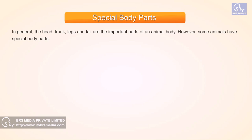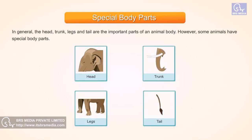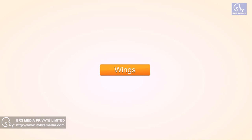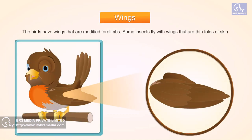Special Body Parts. In general, the head, trunk, legs, and tail are the important parts of an animal body. However, some animals have special body parts. Wings: birds have wings that are modified forelimbs. Some insects fly with wings that are thin folds of skin.